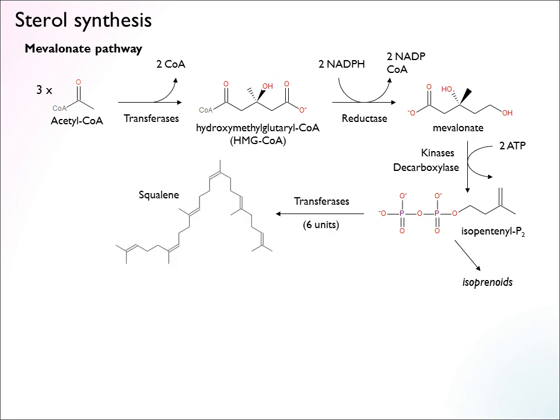Moving on to sterols: the isopentenyl units are now the building blocks, and there are six steps of transferases with no energy expenditure — just cutting and pasting. This produces something called squalene, a polymer of six of these building blocks. Because ATP was expanded earlier to get the phosphate groups, the transferases can be driven in this direction by hydrolyzing the phosphate bonds. Similar to fatty acid synthesis, ATP is invested upstream to charge the molecule, providing the free energy used downstream when forming squalene.